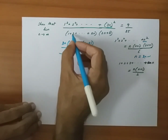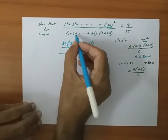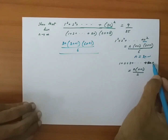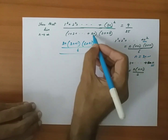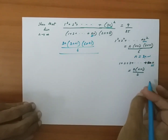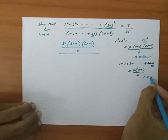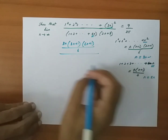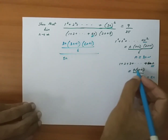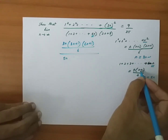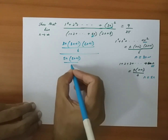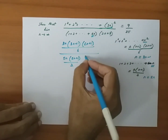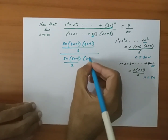The whole expression is divided by the sum of natural numbers 1 plus 2 plus dot dot 5n. For the sum of natural numbers, we know the formula as n(n+1) by 2. But here instead of n I have 5n, so wherever I have n I substitute 5n. So it becomes 5n into 5n plus 1 divided by 2, and then multiplied by 2n plus 3.